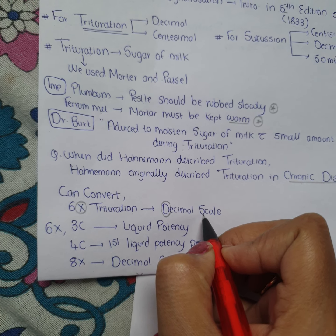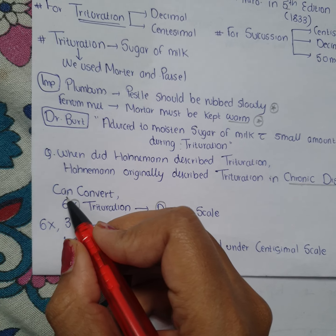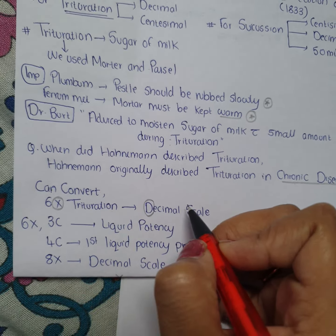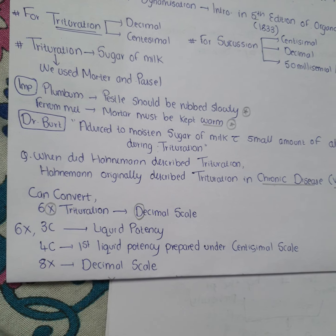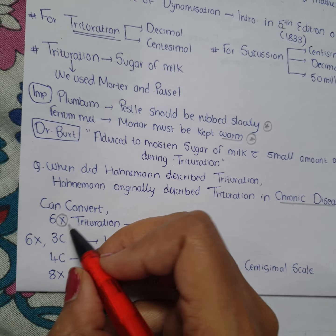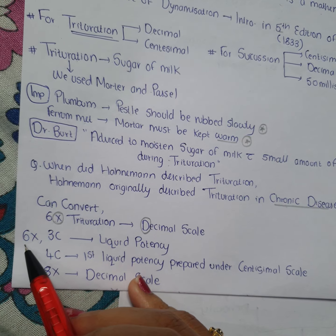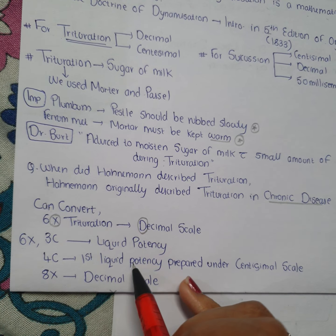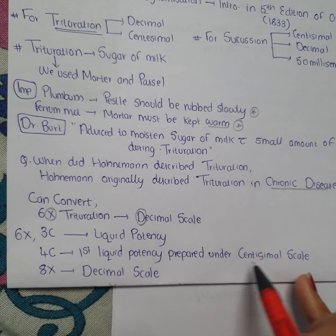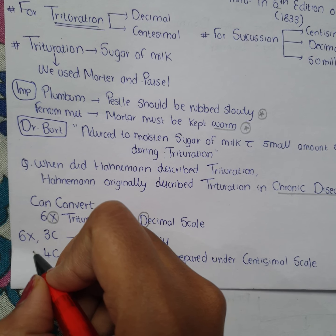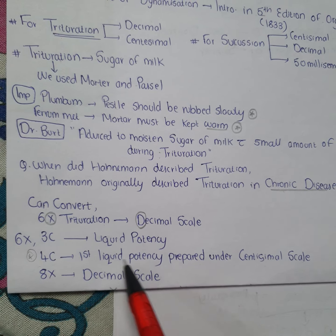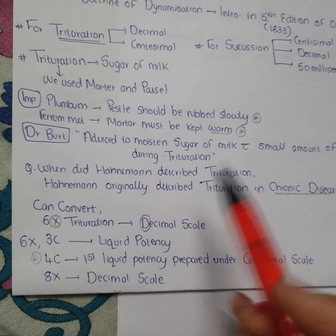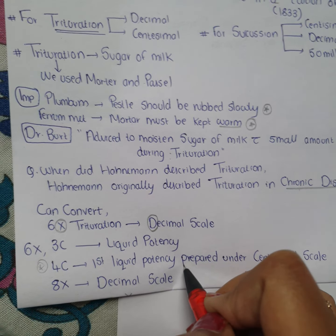Regarding converting 6x trituration to decimal scale: decimal scale medicines are denoted in terms of X. 6x trituration equals 3C liquid potency. 4C is the first liquid potency prepared under the centesimal scale — a very important MCQ. 8x is a decimal scale potency.